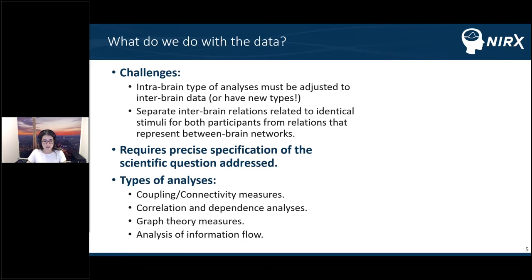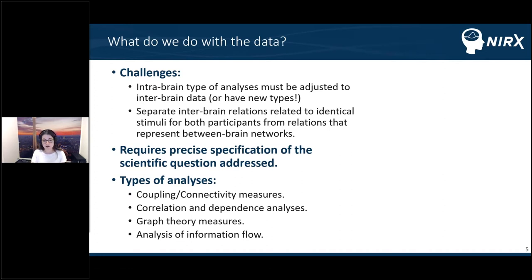The types of analysis applied to hyperscanning data can be separated into different categories. There are various coupling or connectivity measures which study coherence to estimate between-brain couplings — for example, wavelet transform coherence, which is very common in fNIRS. Then we have correlation and dependence analysis, which estimate correlation between signals from two brains. Between-brain networks can also be quantified with graph theory measures, which focus on modularity, small-worldness, and directionality. Finally, there is analysis of information flow from one brain to another, using methods like Granger causality.